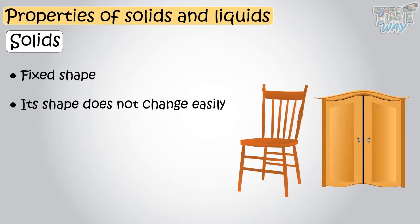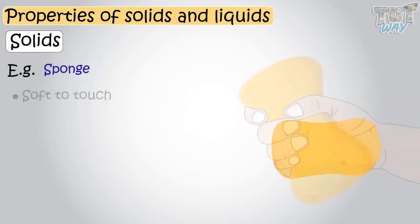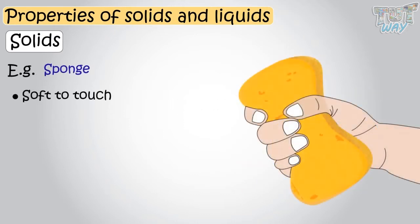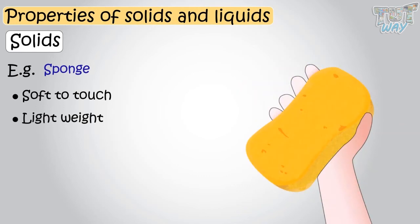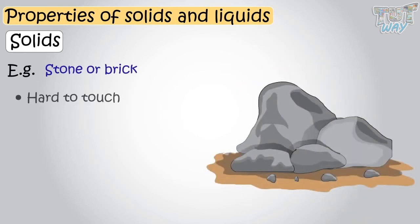Different solids have different properties. Like a sponge is a solid which is soft to the touch and very lightweight. Other solids like stone or bricks are very hard to touch and very heavy to pick up.